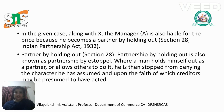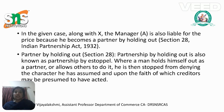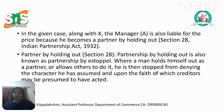Now we will see the situation. In the given case, along with X, the manager A is also liable for the price because he becomes a partner by holding out. Under Section 28 of the Indian Partnership Act 1932, the partner by holding out is also known as a partnership by estoppel. Where a man holds himself out as a partner or allows others to do so, he is then stopped from denying the character he has assumed and upon the faith of which the creditor may be presumed to have acted.